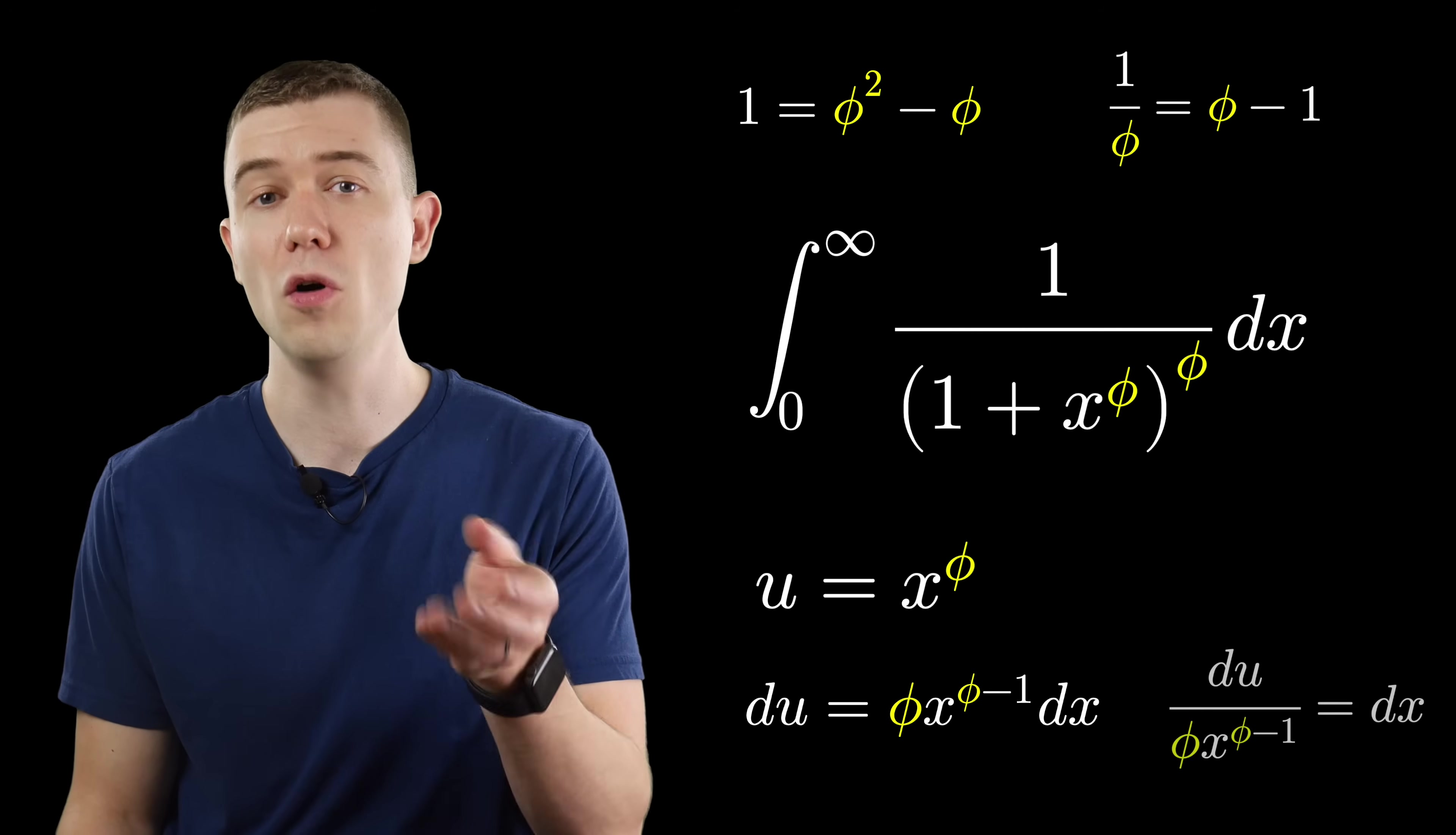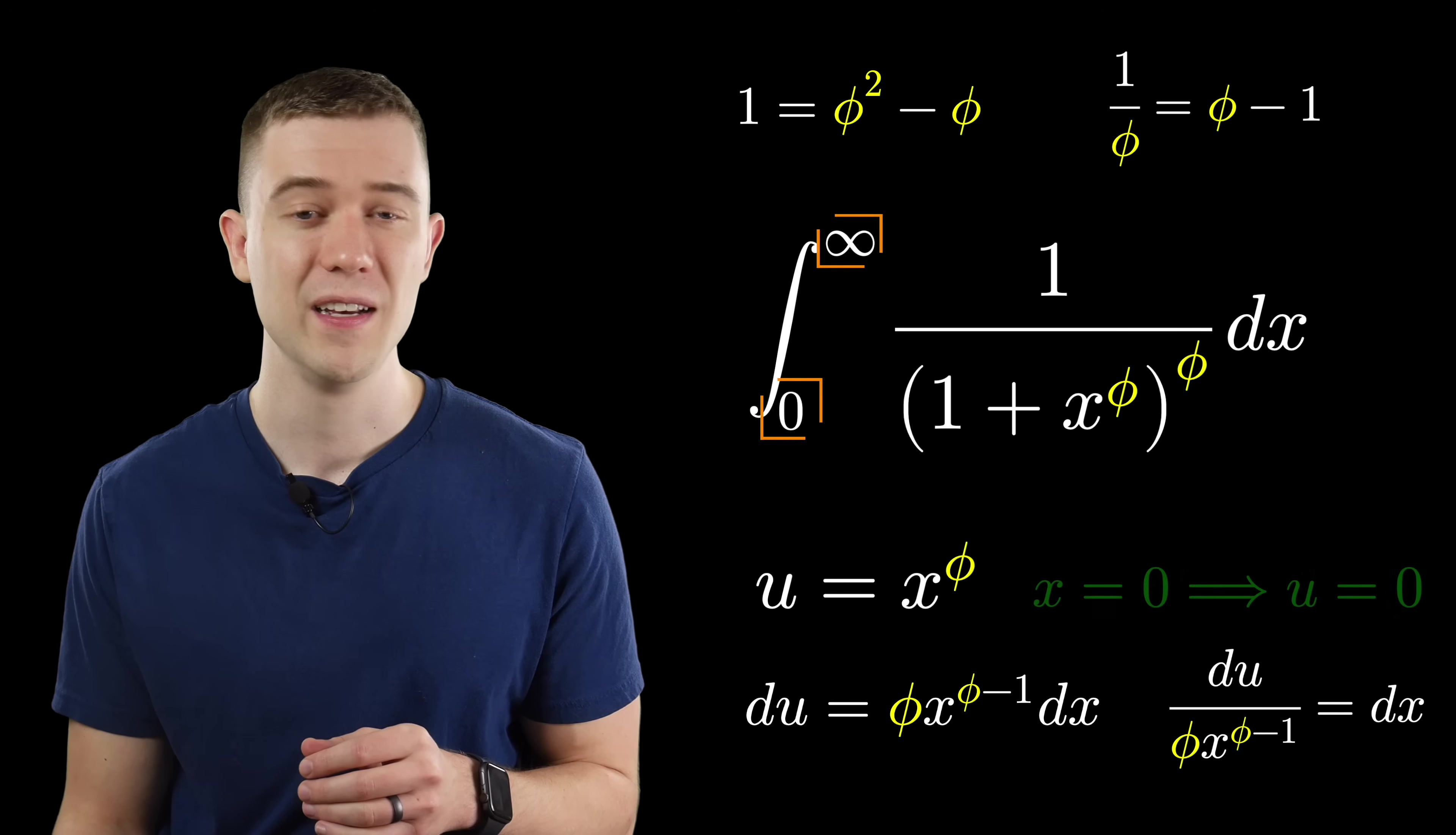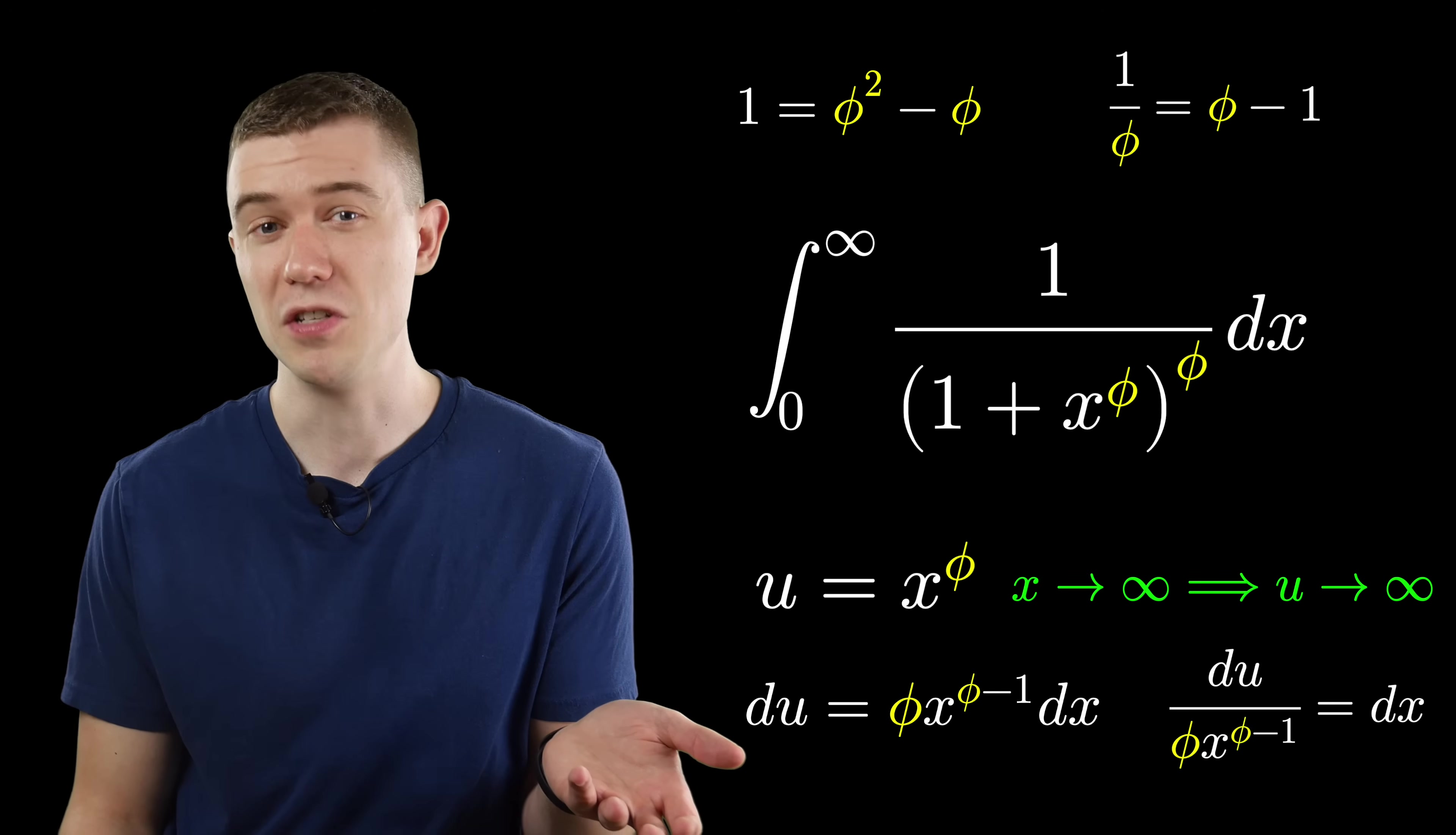Or, du over phi x to the phi minus 1 is dx. Notice that we don't have to change our limits of integration, since when x is 0, u is also 0, and when x tends towards infinity, so does u.